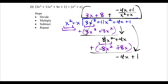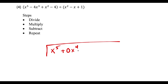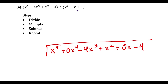This last question is a beast, so let's stay organized. We've got x to the fifth — no x to the fourth term, so we write 0x to the fourth as a placeholder — then minus 4x to the third, an x squared term, a 0x placeholder since there is no x term, and minus 4 at the end. This time we're dividing by a trinomial: x squared minus x plus 1. We have to be very organized.